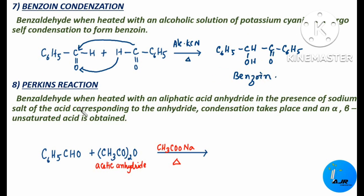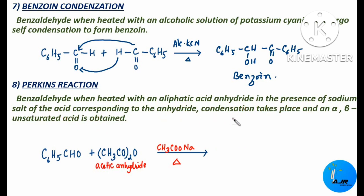The next reaction is Perkin's reaction. Benzaldehyde when heated with an aliphatic acid anhydride — that is acetic anhydride — in the presence of sodium salt of the same acid, which is sodium acetate, condensation takes place and we get an alpha, beta unsaturated acid.